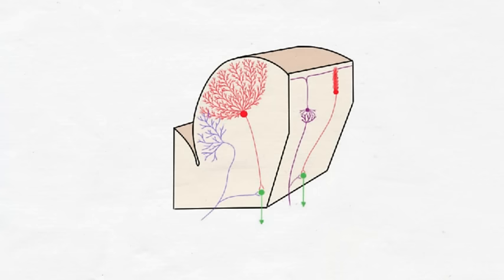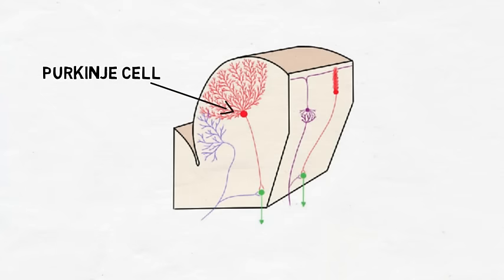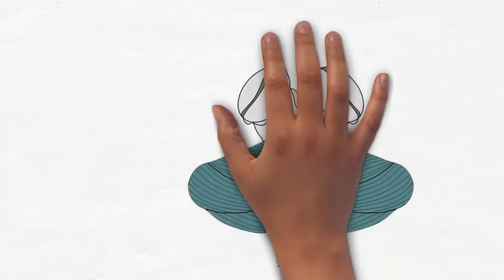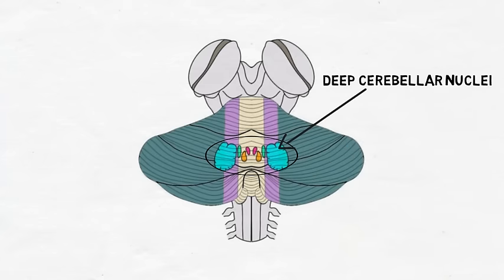When information is sent to the cerebellum, it takes an indirect path to reach extensively branched cells called Purkinje cells. These cells then project to a group of nuclei in the center of the cerebellum called the deep cerebellar nuclei. The deep cerebellar nuclei send the information to various areas in the brainstem and thalamus that then can influence motor areas of the cortex or descending motor tracks to modify movements.